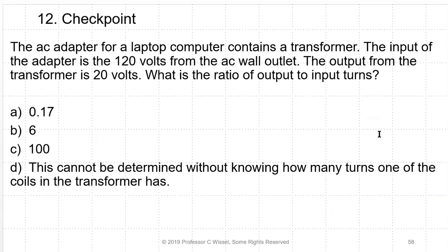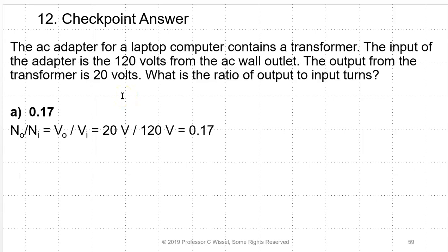Practice problem: an AC adapter for a laptop has 120 V input and 20 V output. The turns ratio NP/NS = VP/VS = 120/20 = 6:1. The ratio of output to input turns NS/NP = 1/6 ≈ 0.17. This is a step-down transformer with six input turns for every one output turn.